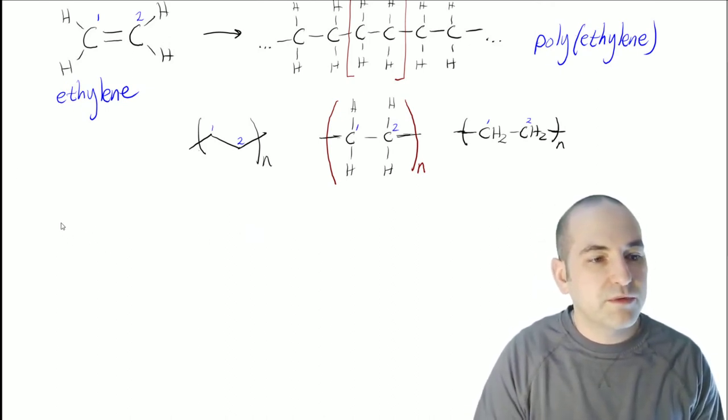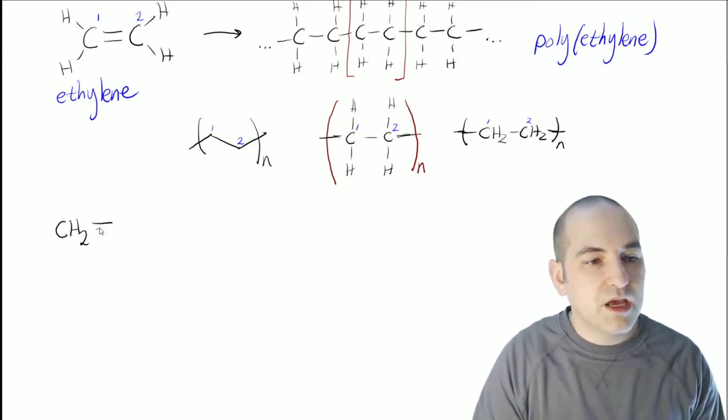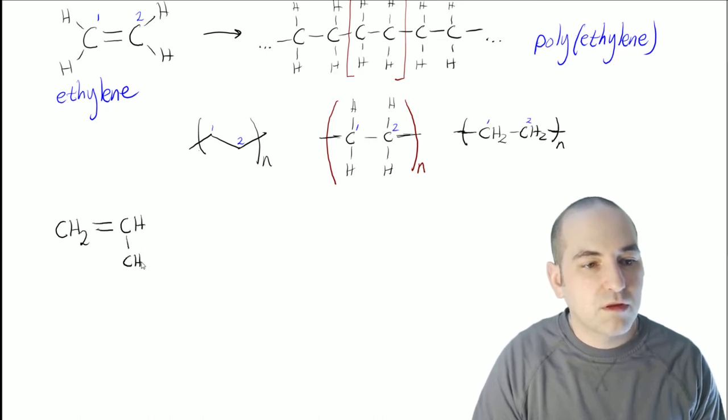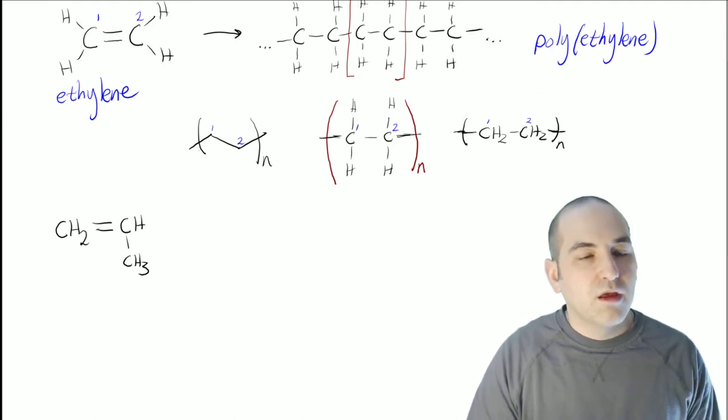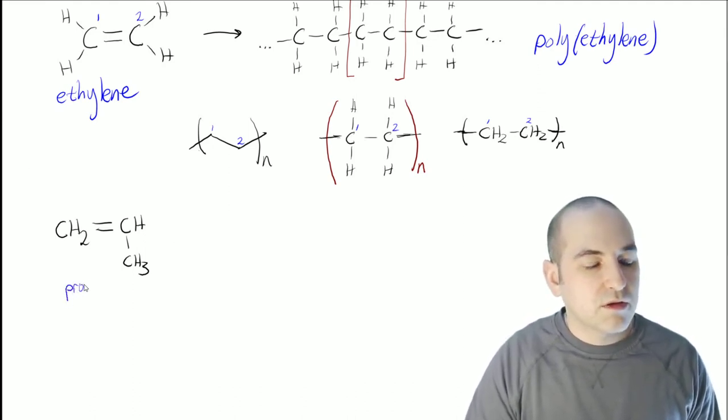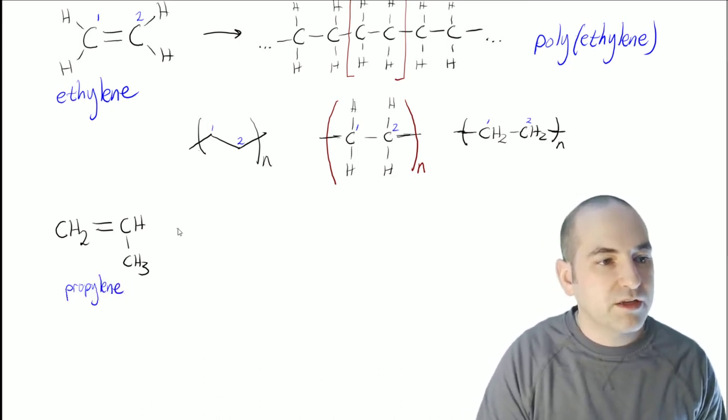So if instead of ethylene, we started with propylene, and this time I'm going to go straight to the condensed structure like that. So that is propylene. And if we look at that condensed structure for propylene, we want to show it repeating multiple times.